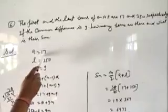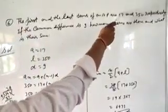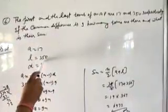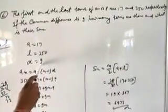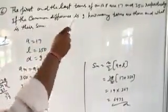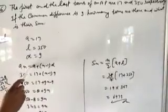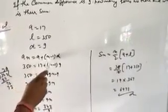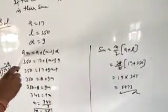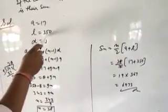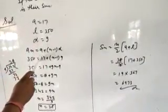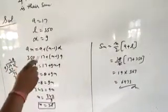Then A equal to 17, first term is 17. AN, the last term, is 350. D equal to 9. If the common difference is 9, then D equal to 9. AN equal to A plus N minus 1 into D. AN means last term, last term means 350. 350 equal to A equal to 17 plus N minus 1 into D, D equal to 9.